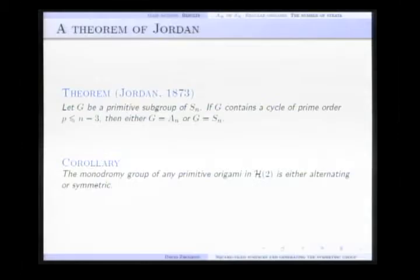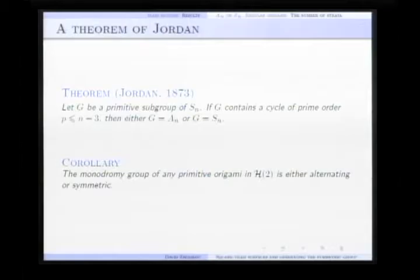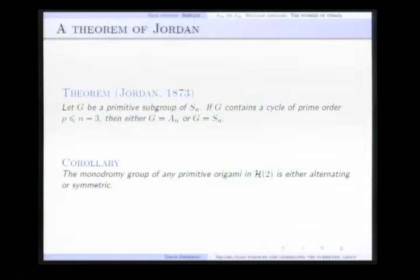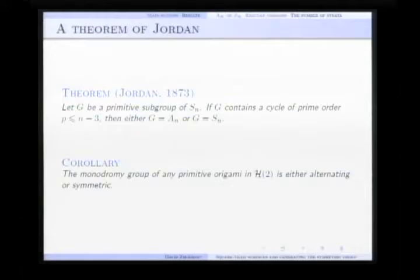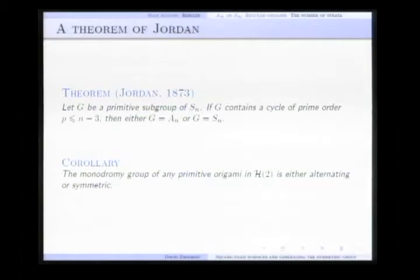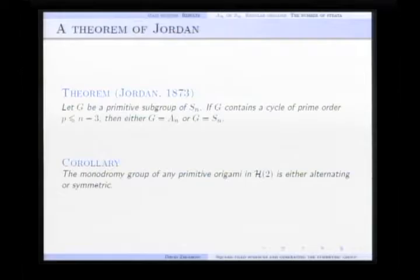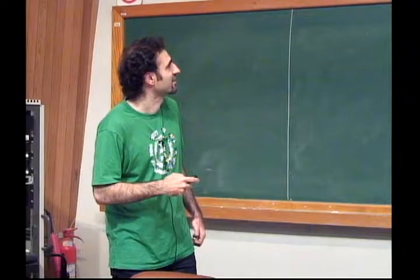The proof of the theorem relies, for instance, on the theorem of Jordan, the classical theorem of Jordan, telling us that any primitive subgroup of Sn containing a p-cycle where p is prime less than n-2, then G is either An or Sn. And a corollary of the theorem, just immediate corollary, is the fact that the monodromy group of any primitive origami in the stratum H(2), the simplest stratum, is either alternating or symmetric. But this corollary is somehow more difficult.